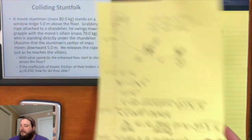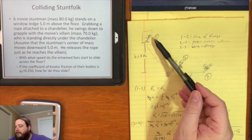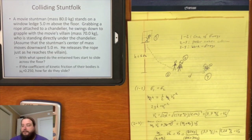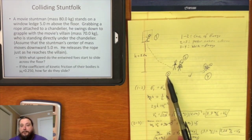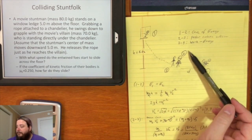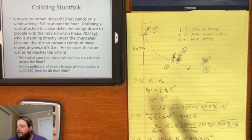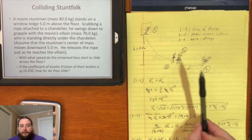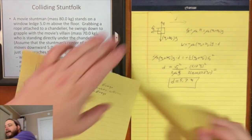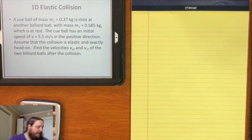Our strategy for this problem: draw a picture, identify the physical concepts applicable between each of the four moments of interest. We used conservation of energy between moments 1 and 2, momentum conservation for the perfectly inelastic collision between moments 2 and 3, and the work-energy theorem between moments 3 and 4. Now let's look at an example of an elastic collision in one dimension.